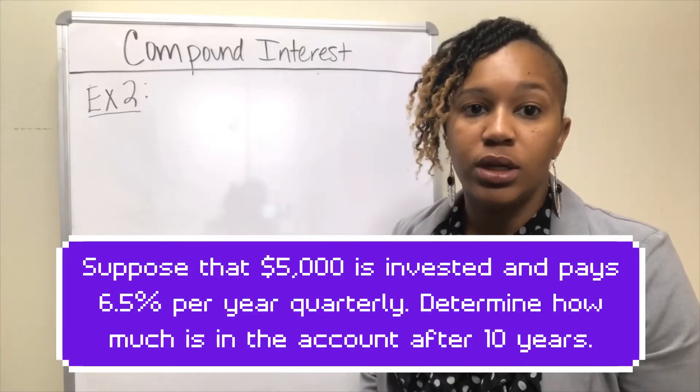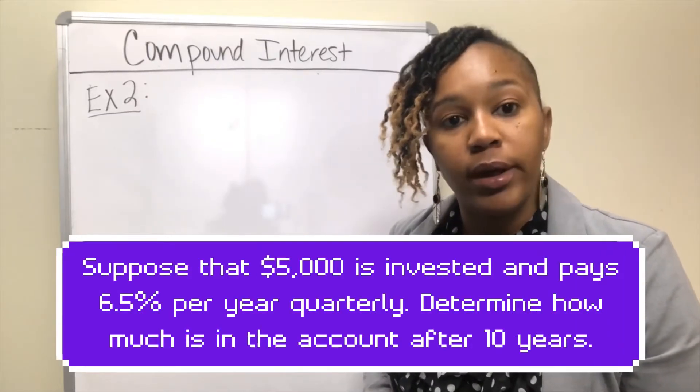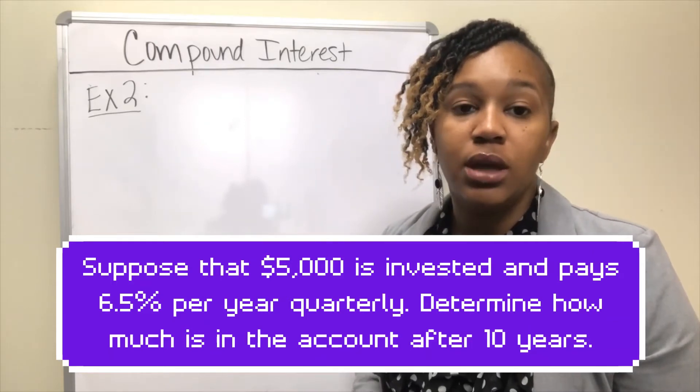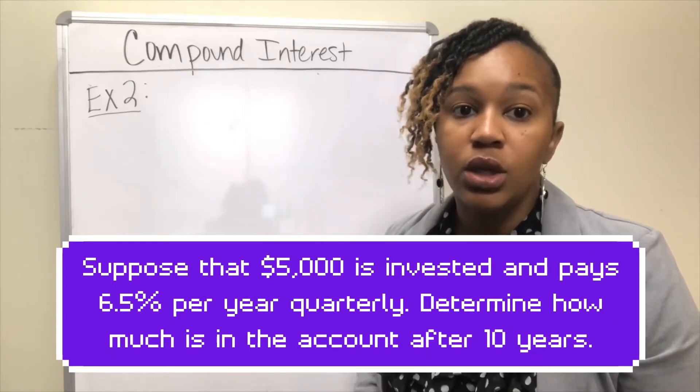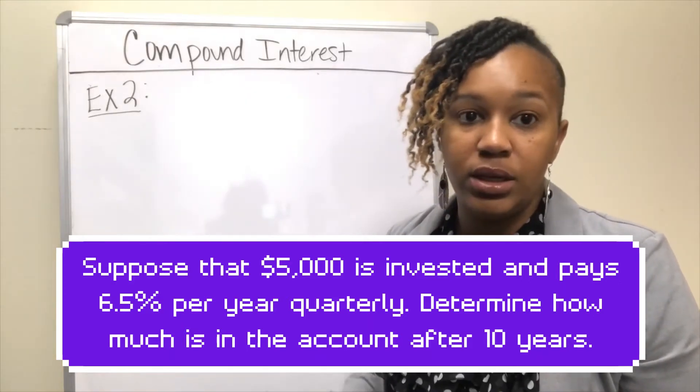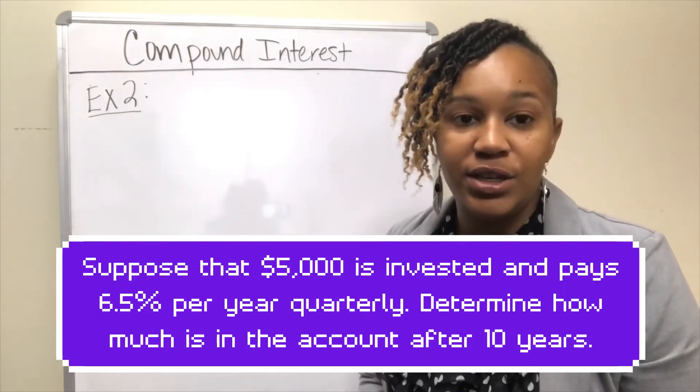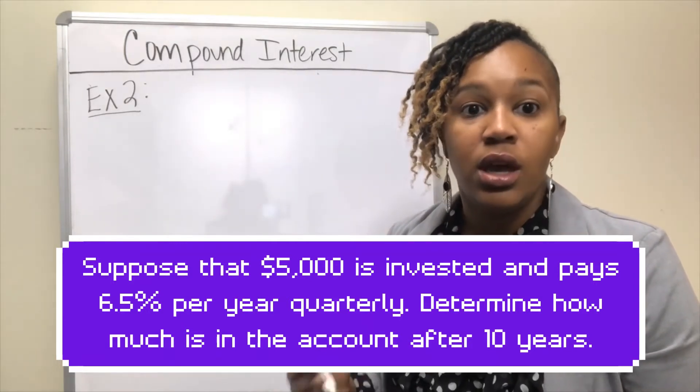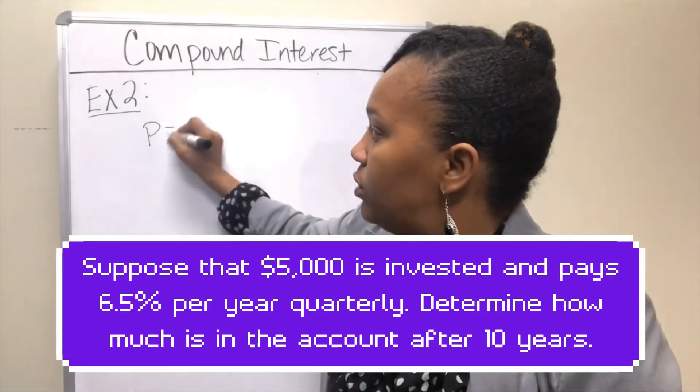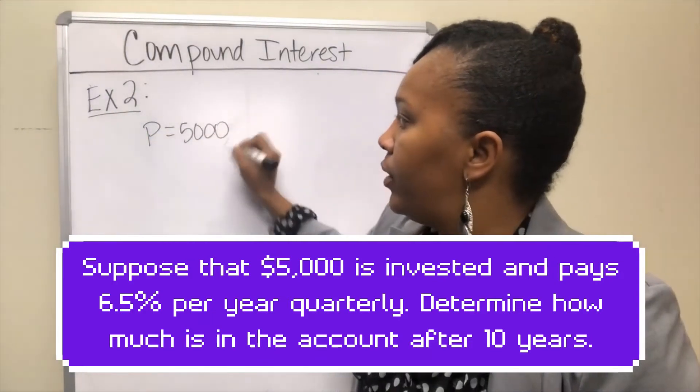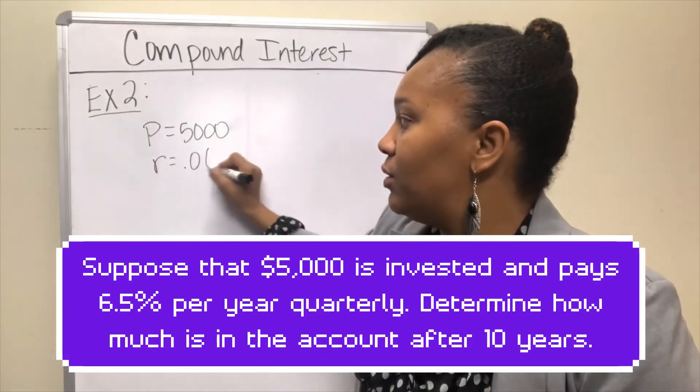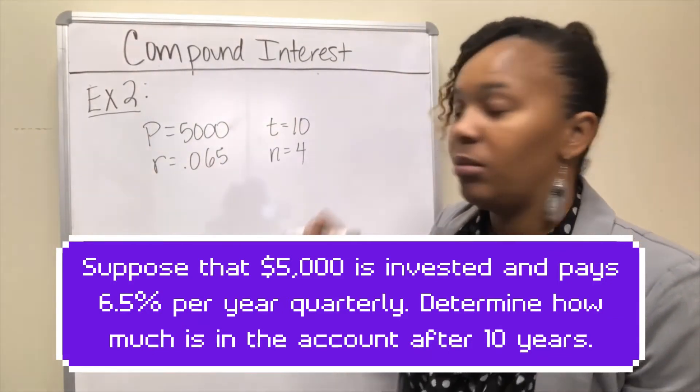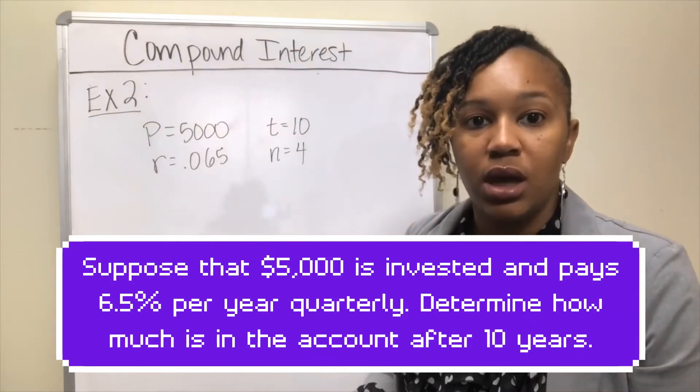For example 2, we're going to take the same scenario we had in example 1, except we're going to change one thing. This time, what if interest is compounded quarterly? We're still going to invest $5,000 at 6.5% interest for 10 years. But this time, our financial institution calculates interest every 3 months. We have our same values: P is still 5,000, R is still 0.065, T is still 10. But this time, n is going to be equal to 4 because interest is compounded quarterly.